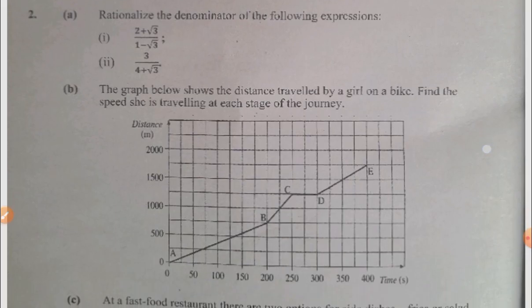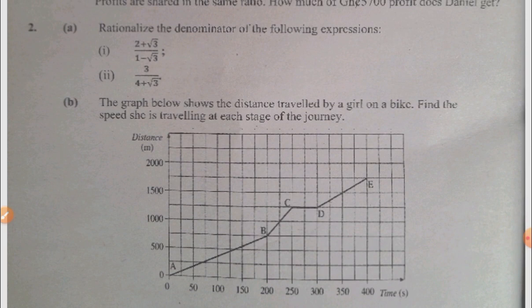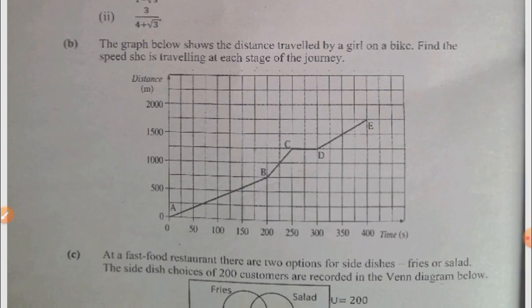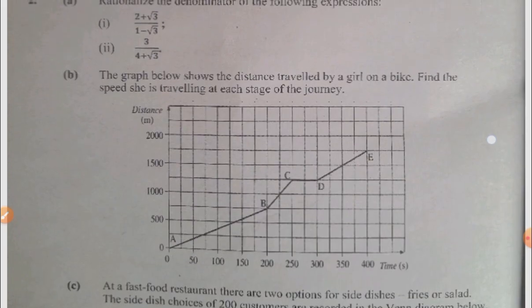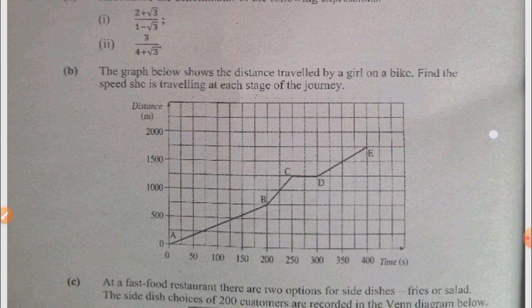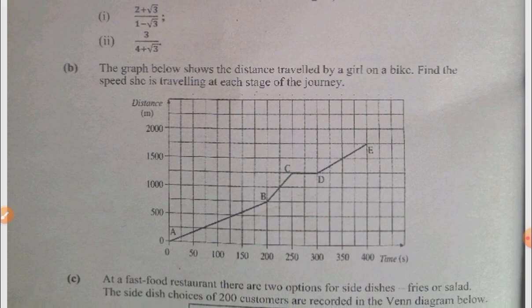So question two, you're supposed to rationalize the set, then what has to do with graph, travel graph, answer the question. Find the speed she's traveling at each stage, so stage A, B, C, D and then E.